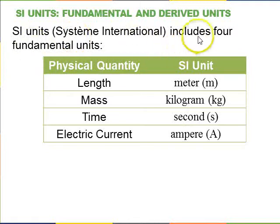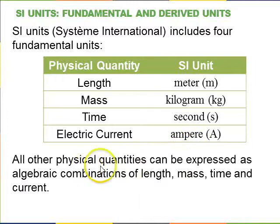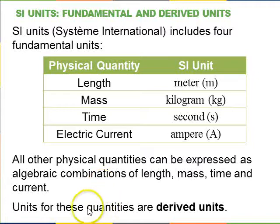And SI units include four fundamental units for length, mass, time, and electric current, called the meter, the kilogram, the second, and the ampere. And all other physical quantities can be expressed as algebraic combinations of length, mass, time, and current. Sometimes you'll have length times length is length squared, or length per time would be velocity, etc. So, units for these quantities are called derived units. So, these are the fundamental units. If you combine them, you get derived units.